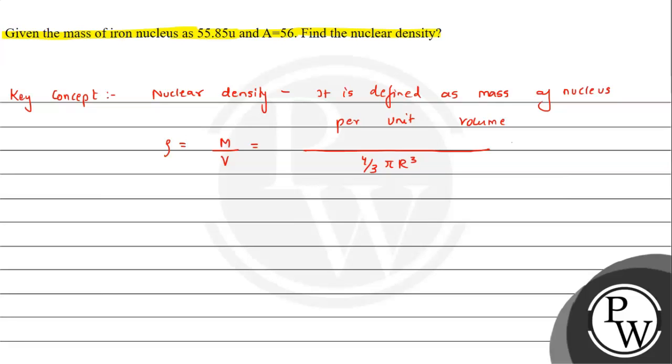For mass of nucleus, we need to understand that first of all, the nucleus is made of protons plus neutrons. So here we will say mass of each nucleon into A, that is mass number or total number of nucleons.